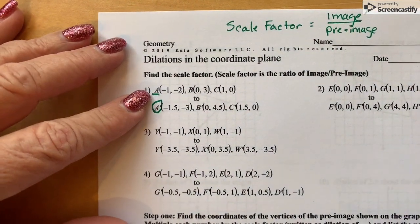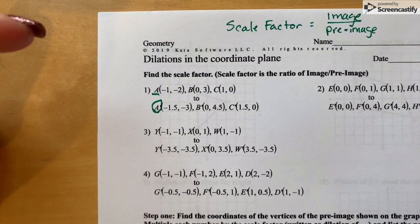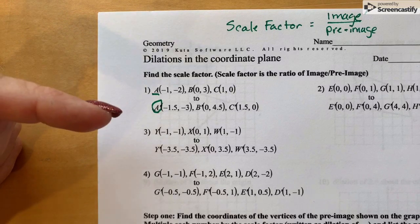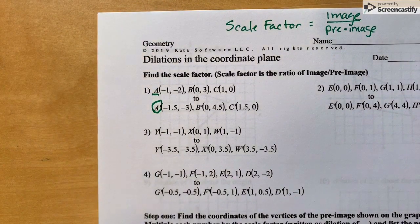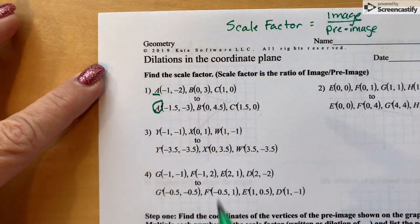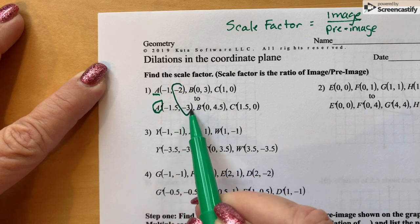The only thing you need to do is pick a couple of numbers and put the image number over the pre-image. It doesn't matter which coordinate you use as long as they are coordinating.